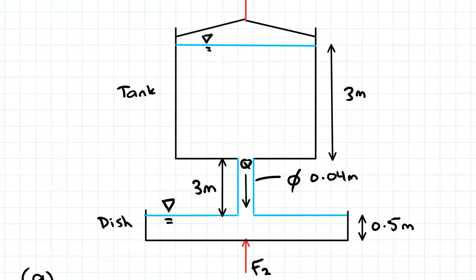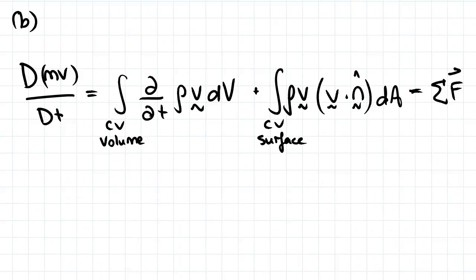We approach this question in a similar way. The question asks us about a supporting force, so straightaway we know we're dealing with linear momentum. Remember, Bernoulli's equation can give us pressure, velocity, or head at a point. Conservation of mass gives us area or velocity, and conservation of linear momentum returns a force. It's the only thing that gives us a force for a dynamic fluid.